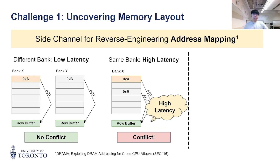But if they are in the same bank, they need to take turns to use the row buffer, leading to higher latency. This way, by keeping an address such as 0xA constant, we can find all addresses in the same bank as 0xA by observing this latency.